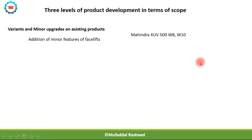Taking the example of the Indian manufacturer Mahindra, which manufactures the SUV XUV 500 — this vehicle was launched with the top-end variant W8, and after a few years it launched the variant W10, which was a much higher variant compared to W8, with a minor facelift and added features. This is an example of minor upgrades to existing products.